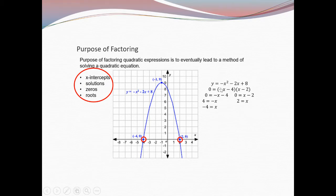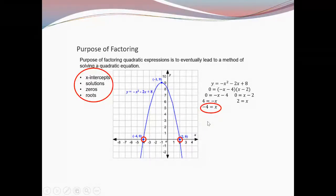This is the equation of a specific graph. To graph it, you need to know the vertex. But one of the most important things is factoring to get the intercepts — for example, negative 4, 0 and 2, 0. I'm going to show you different ways to factor in this presentation. These are the intercepts, or the solutions, the zeros, or the roots.